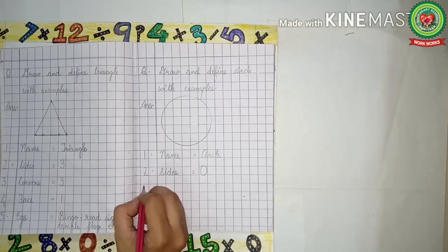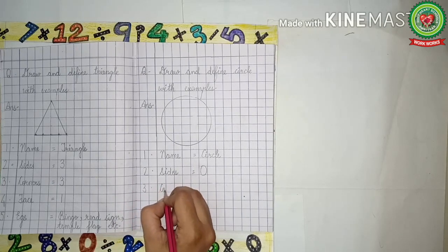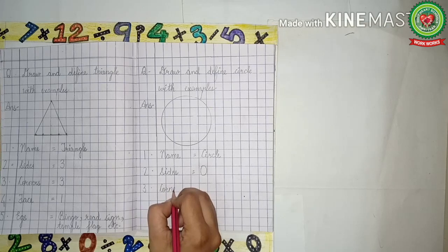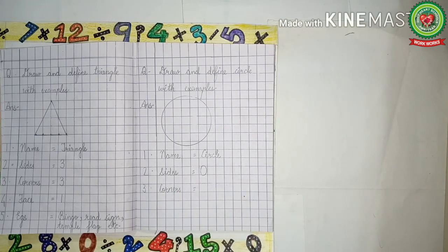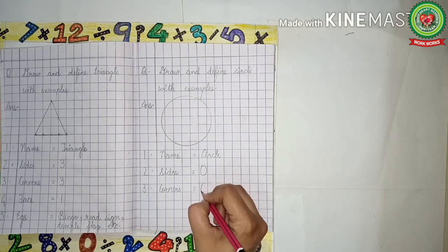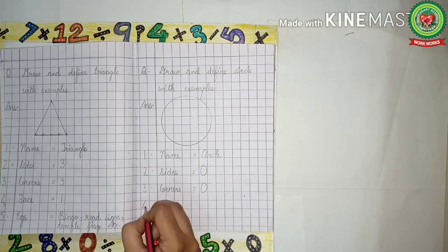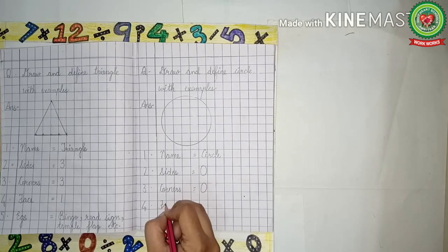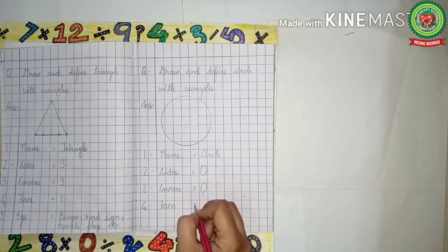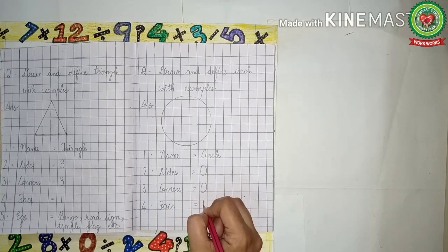Leave one line. Three dot: corners — C-O-R-N-E-R-S. Now how many corners does a circle have? No corners. So we will write zero. Leave one line. Four dot: face. Circle has one face, so we will write one.